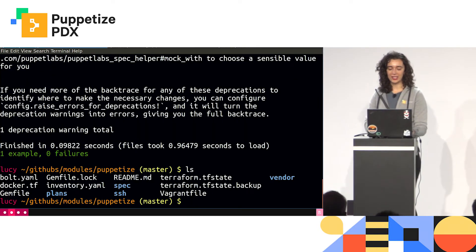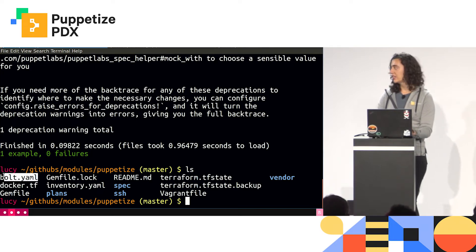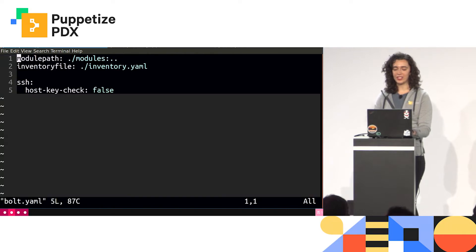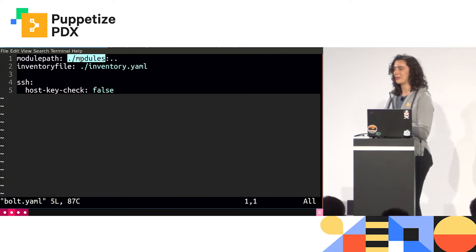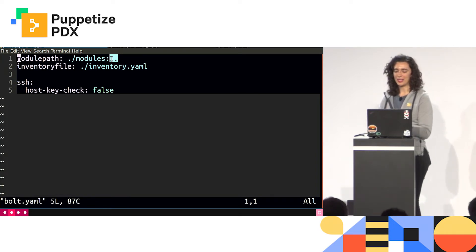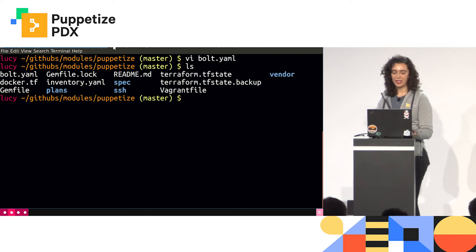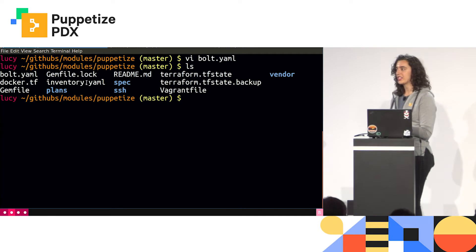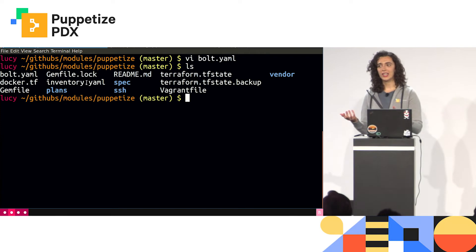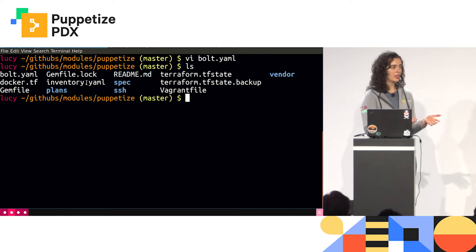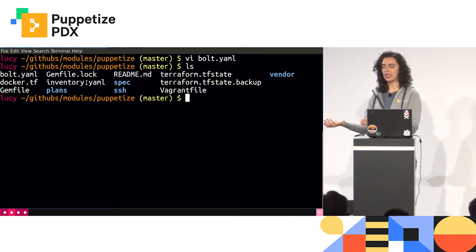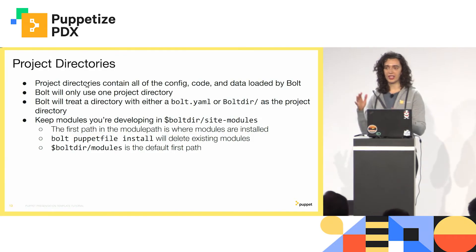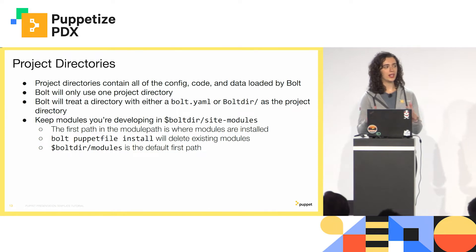Since I have my bolt.yaml defined here, this is my project directory. I have my module path with modules first so that if I install, it doesn't overwrite my stuff, and I set the module path to dot-dot so this module gets loaded. I also have my inventory file here. Using project directories is a great way of separating your data from the actual Bolt content you're writing — it makes it easy to share, keeps things modular, and ensures content can be used outside your environment.